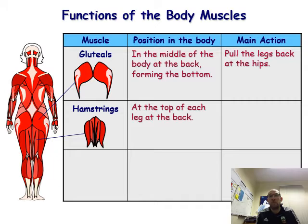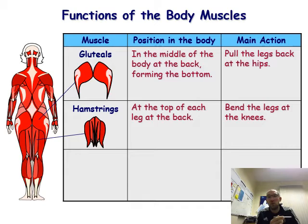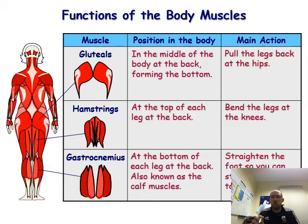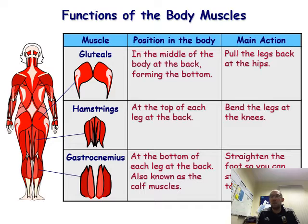The hamstrings are at the back top of your leg and they bend your leg at the knee — think of kicking a football as you draw that leg back. The gastrocnemius is at the back of the leg, also called the calf. It straightens the foot — think of rising onto your tiptoes. That's very important when we come to lever systems, specifically the second class lever.